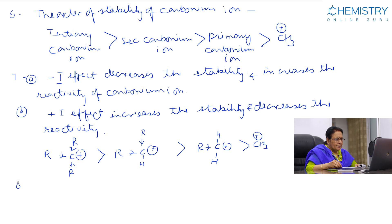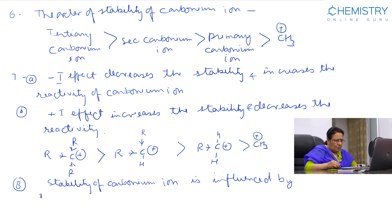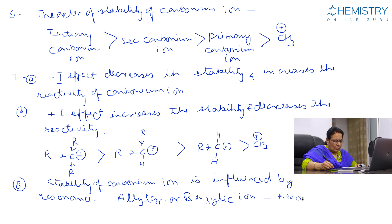The stability of a carbonium ion is also influenced by resonance. For example, allylic and benzylic carbonium ions possess resonance stabilization, making them more stable.